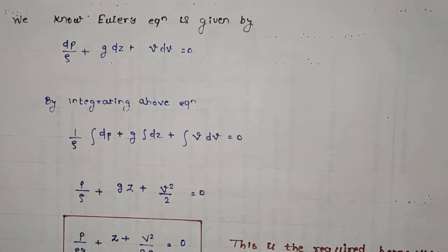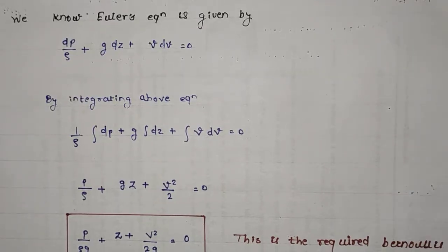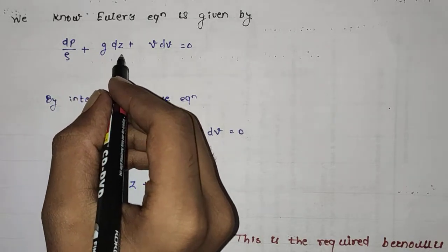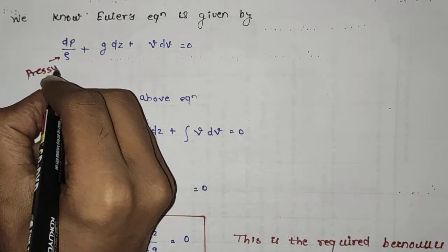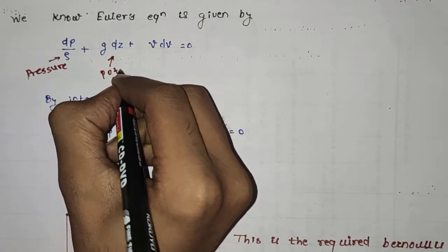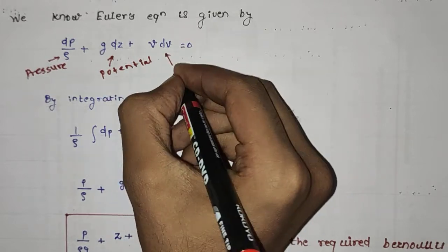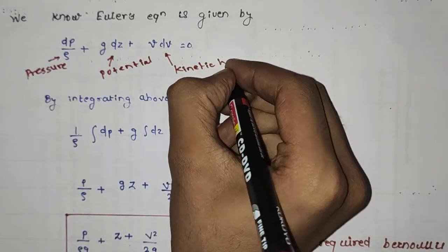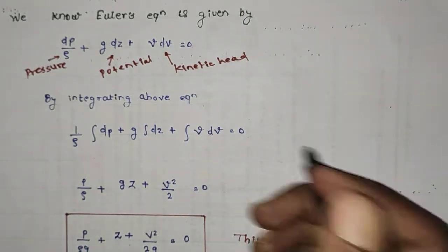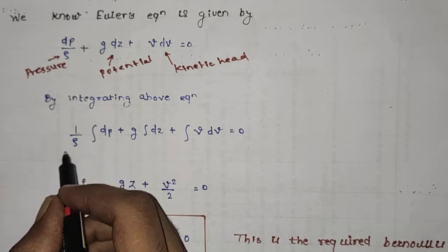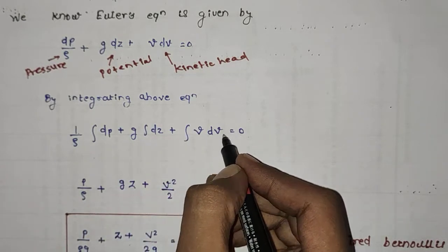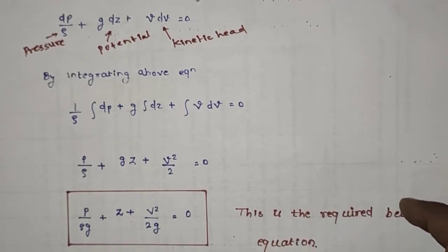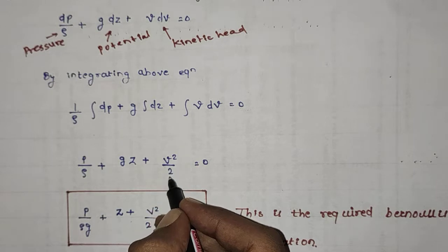Now let's derive the expression for Bernoulli's equation. Bernoulli's equation is derived from Euler's equation, which is given by: dp/ρ + g·dz + v·dv = 0. By integrating the Euler's equation we get: (1/ρ)∫dp + g∫dz + ∫v·dv, and after integrating we get p/ρ + g·z + v²/2 = constant.